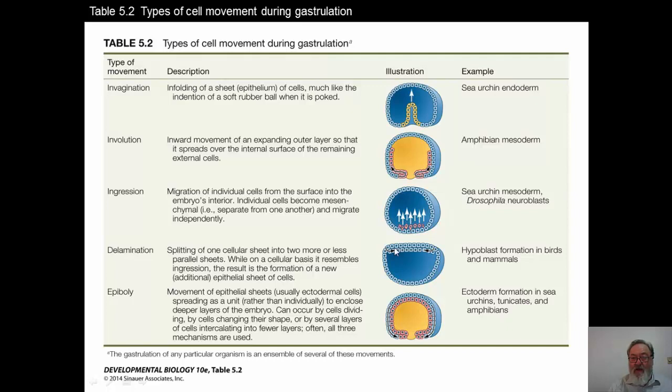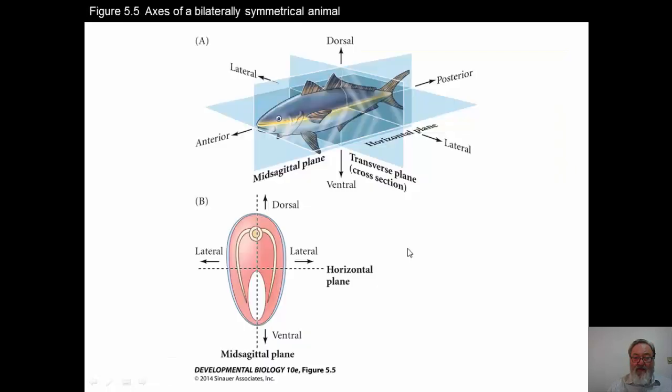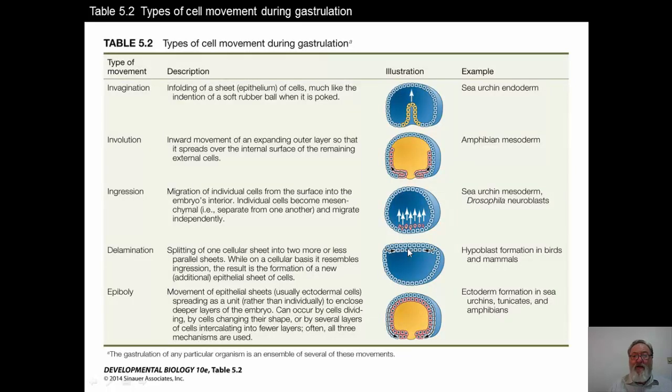Delamination, this is hypoblast formation. And again, in this case you have cells coming in, but they are in parallel sheets and they will form a whole new sheet of tissue. This will happen in birds and mammals. It will happen, for example, when the neural system is forming and you get a neural plate formed.